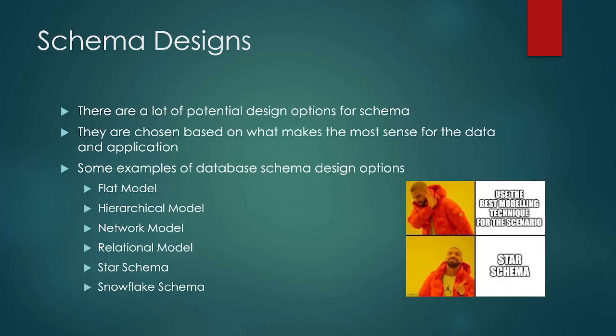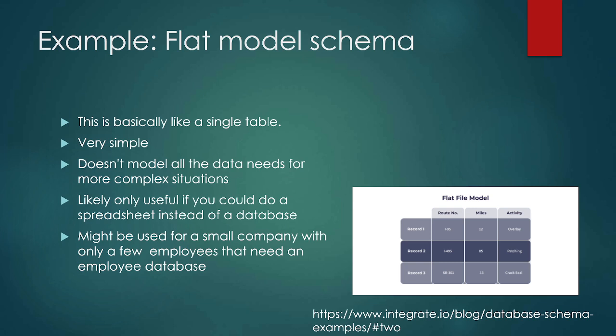There are a lot of different design options for how we can create schema, and we are going to be talking about all of the ones listed here. You end up choosing a schema based on the data that you have and what you want to be doing with the data. You end up having to say, 'Could I do this, but maybe this one works better for the thing I want to show, or the amount of data I have, or the amount of people accessing it?' A flat model is a single table — rows and columns. If you could reasonably get away with a spreadsheet, you could probably get away with a flat model schema.